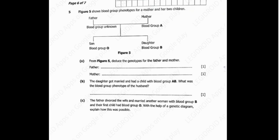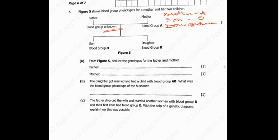So we have for the father, which is non, and then for the mother we've been given A. For the son we've been given A, and then for the daughter we've been given B. So deduce the genotypes for the father and the mother.